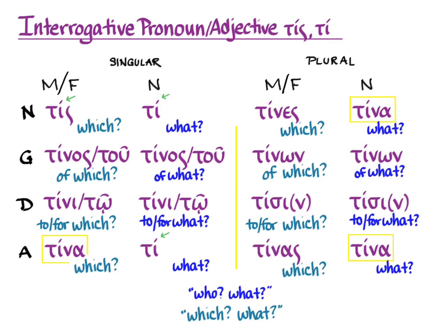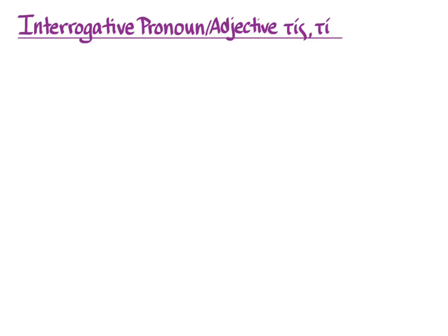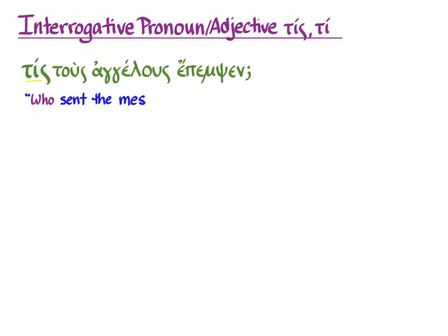Let's look at some examples. Here we have: tis, tous angelous, epemsen. This is an interrogative pronoun in the nominative, serving as the subject of the sentence. The translation is: 'Who sent the messengers?' It's a pronoun — it stands on its own and doesn't modify another noun.